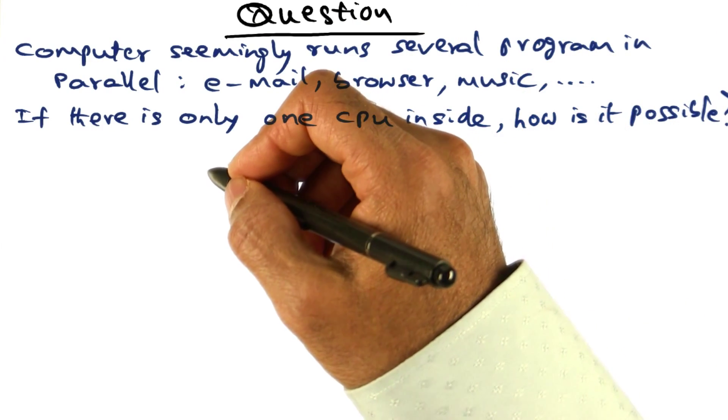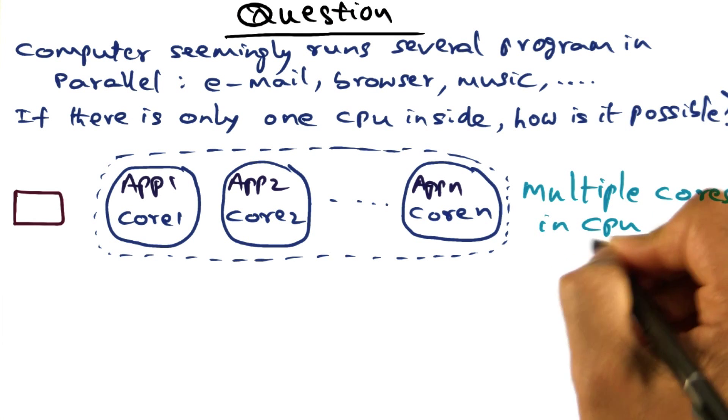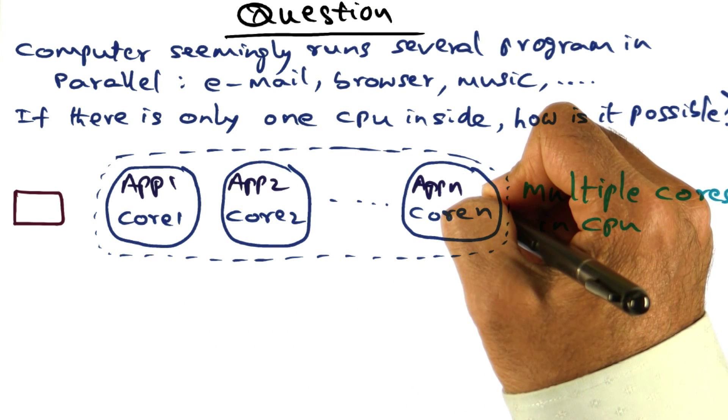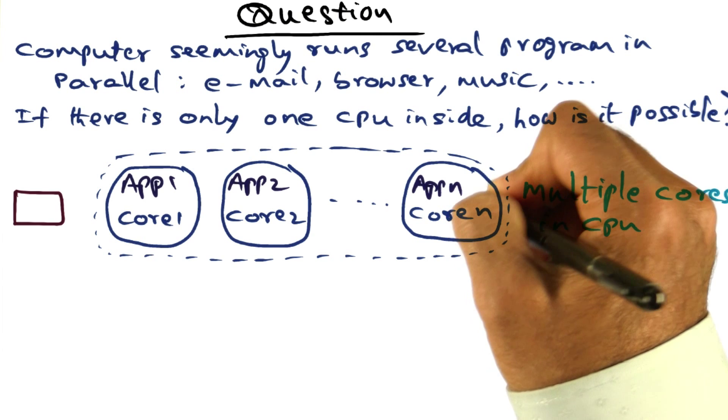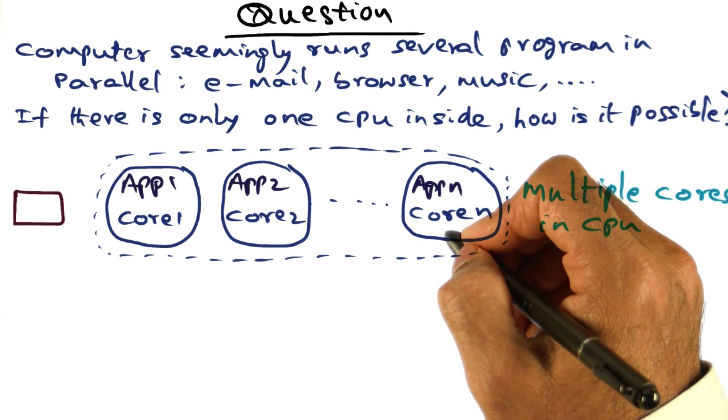I'm going to give you multiple choices. The first choice is, even though there is only one CPU, there are multiple cores within the CPU, and there's one core for each of the applications that you're running. That's how we're able to run multiple applications in parallel.